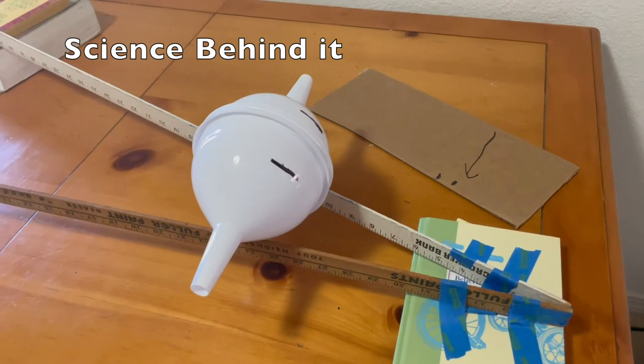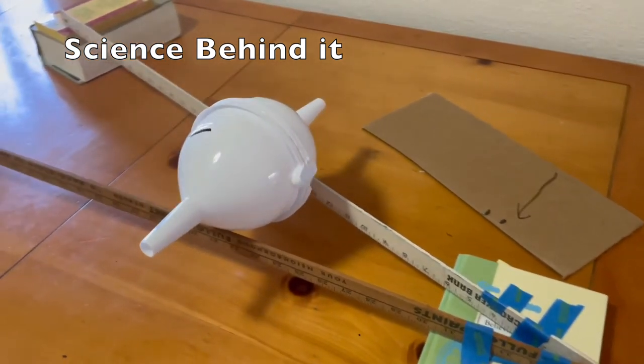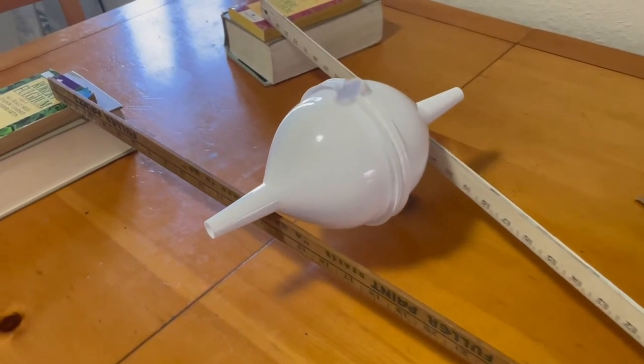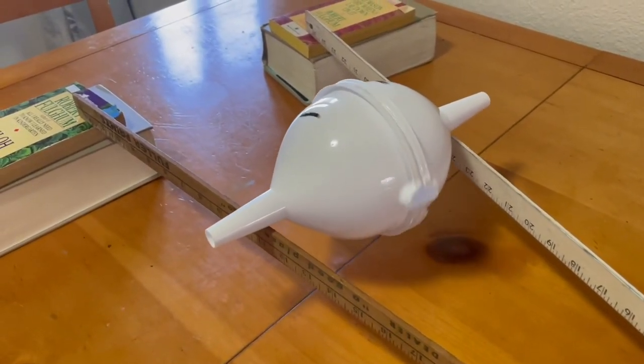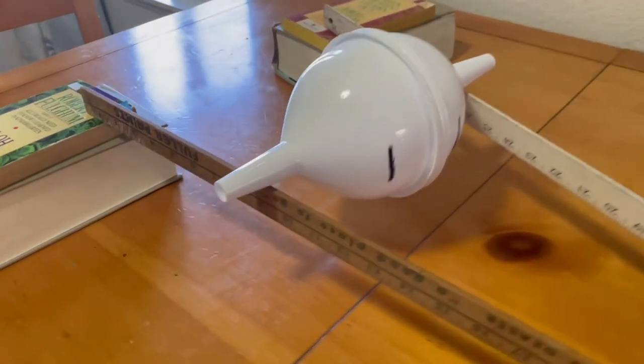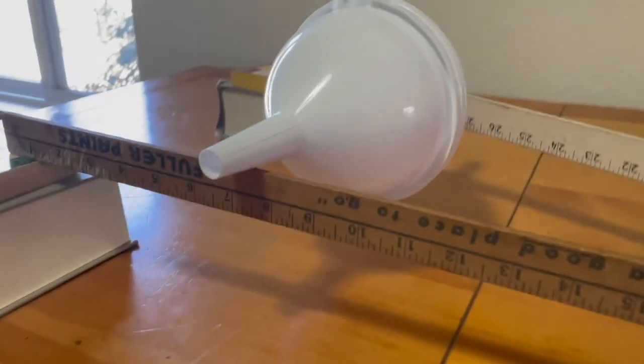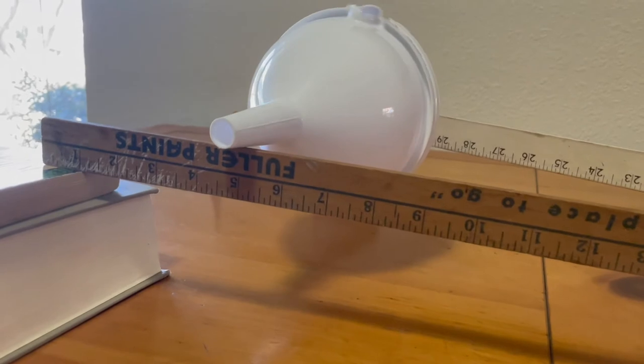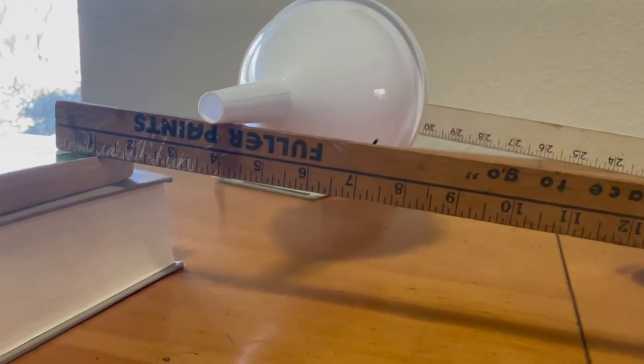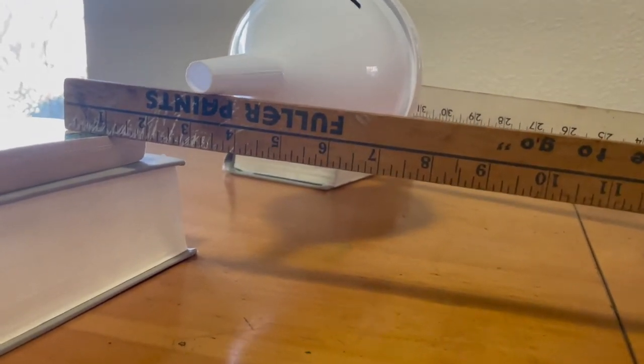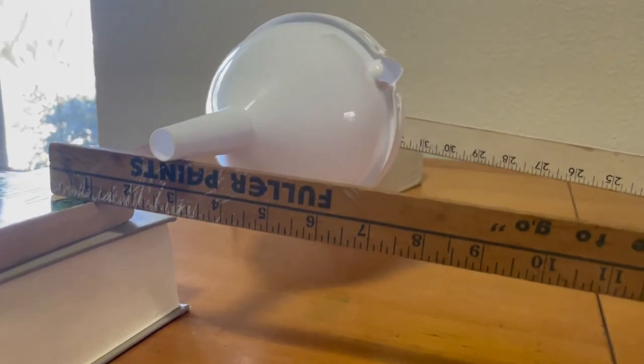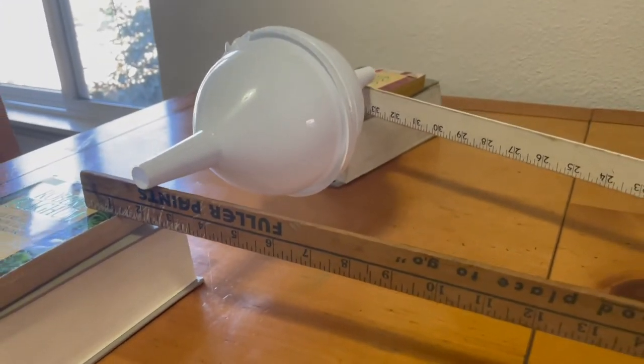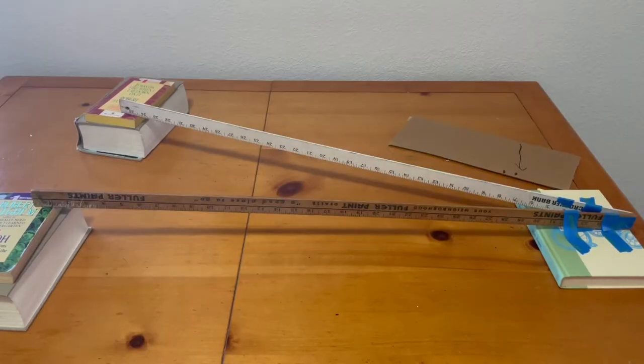So the science behind this is when the funnels are glued together, the center of gravity is directly between the two wide openings. When the funnels are placed on the yardsticks on the table, they begin to roll because the center of gravity is going down. As you can see, the funnels go below the yardsticks. The yardsticks allow the center of gravity of the funnels to go down as the funnels travel up the yardsticks. The funnel shape causes the optical illusion, as it appears to be rolling uphill, even though the center of gravity is actually rolling downhill.